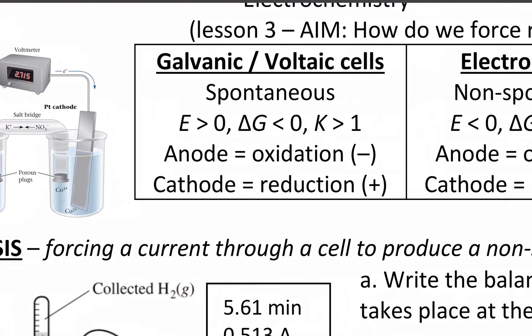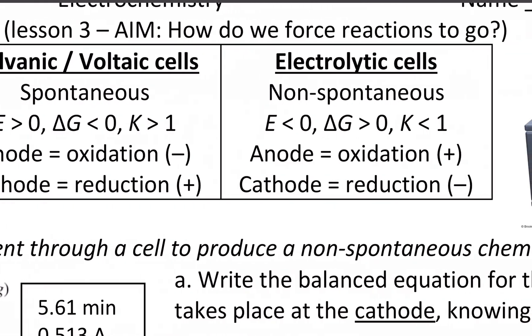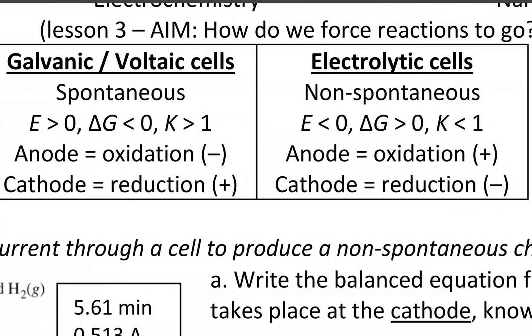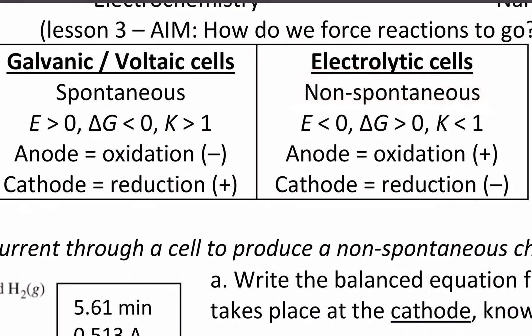When we have the opposite, what's called an electrolytic cell, this is when we use electricity to drive a non-spontaneous reaction. So those three properties are now reversed: the potential is negative, delta G is positive, and K is less than one. In other words, we get a reaction to go by forcing electricity through it.